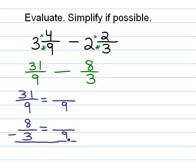And that turns out to be 9, so 3 times 3 will get us to 9. And 8 times 3 gets us to 24. And up here we multiply 31 times 1 and 9 times 1. So we have 31 ninths minus 24 ninths.